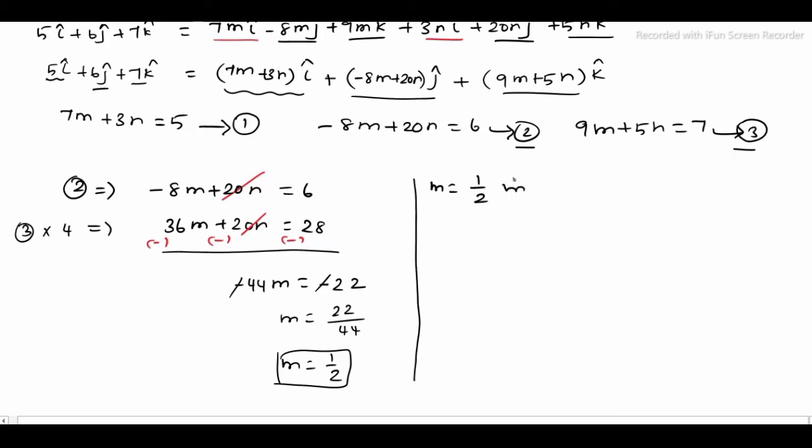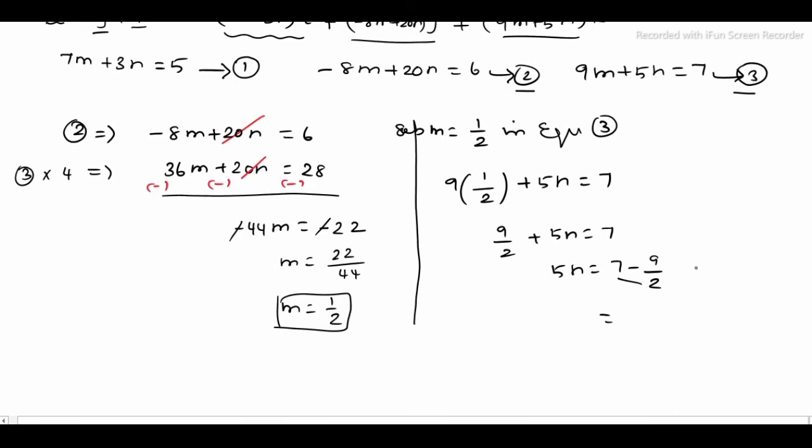Now substitute m = 1/2 into equation 3: 9(1/2) + 5n = 7. This gives 9/2 + 5n = 7. Moving terms: 5n = 7 - 9/2 = 14/2 - 9/2 = 5/2. Therefore n = 1/2.